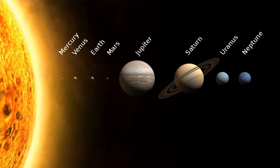Within these populations, some objects are large enough to have rounded under their own gravity, though there is considerable debate as to how many there will prove to be. Such objects are categorised as dwarf planets. The only certain dwarf planet is Pluto, with another trans-Neptunian object, Eris, expected to be, and the asteroid Ceres at least close to being a dwarf planet. In addition to these two regions, various other small-body populations, including comets, centaurs and interplanetary dust clouds, freely travel between regions.